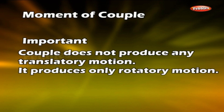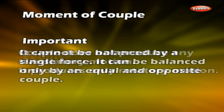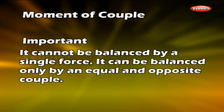The unit of moment of couple is N·m in SI and dyn·cm in CGS. Importantly, a couple does not produce any translatory motion — it produces only rotatory motion. It cannot be balanced by a single force; it can be balanced only by an equal and opposite couple.